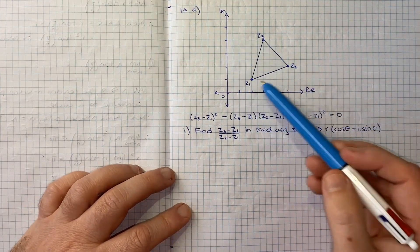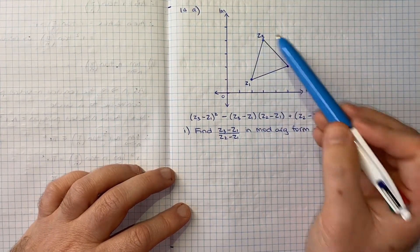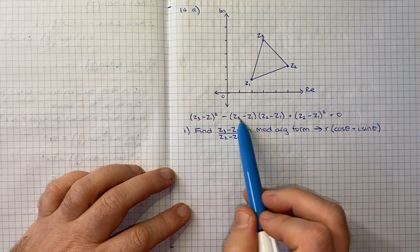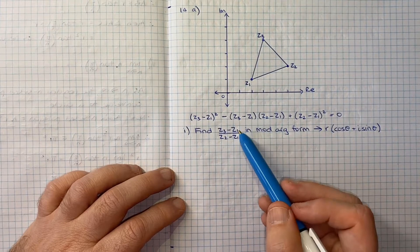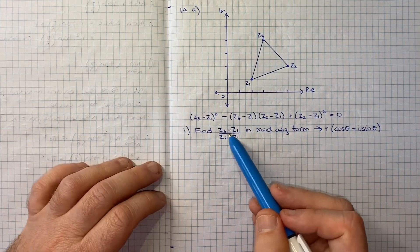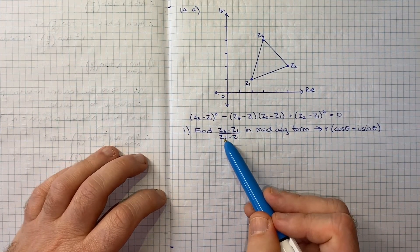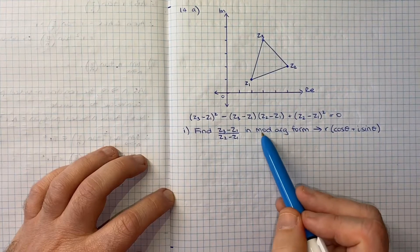I've recreated our diagram. We've got Z1, Z2, and Z3, and then we've got this result that we can rely on.